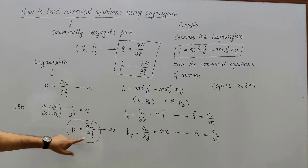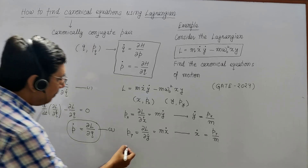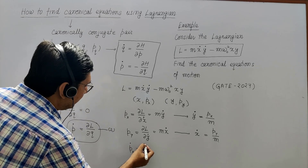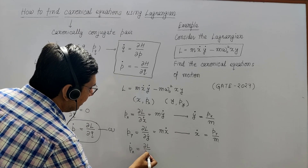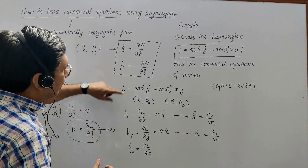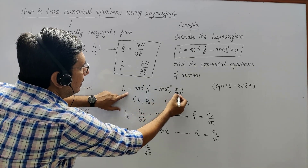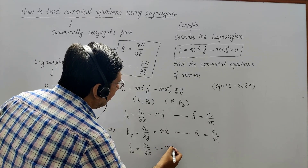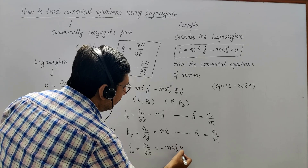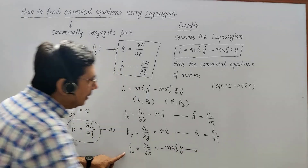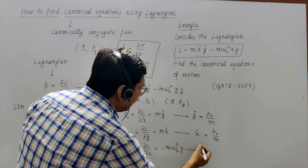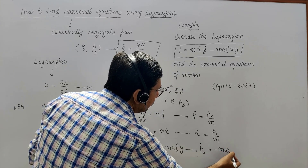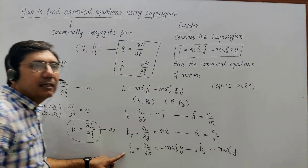Now use the second equation: ṗ = ∂L/∂q. So ṗx = ∂L/∂x. Looking at the Lagrangian, x appears in -mω₀²xy, so the partial derivative with respect to x gives ṗx = -mω₀²y. This is the third canonical equation.